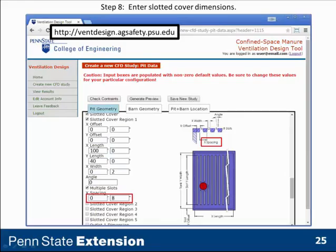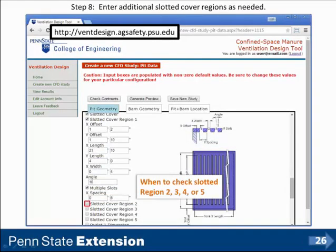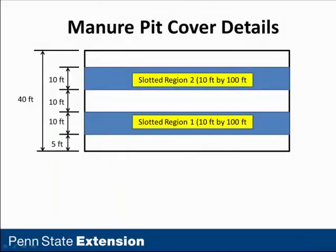If I had a partially slotted floor, I would have slotted regions two, three, or four, but we don't in this case. If I had a 40 by 100 footprint with two regions of slots 10 feet by 100 feet each, I'd divide that into slotted region one and two. The x offset for the first region would be five feet, the y offset for the second region would be 25 feet, and the y dimension of both regions would be 10 feet.